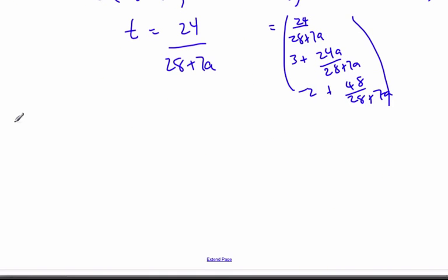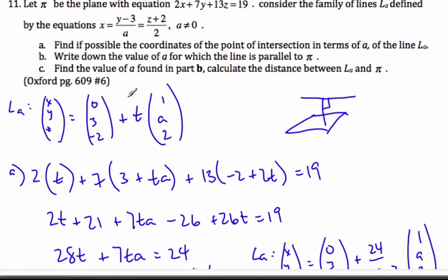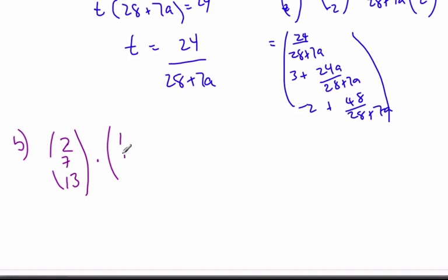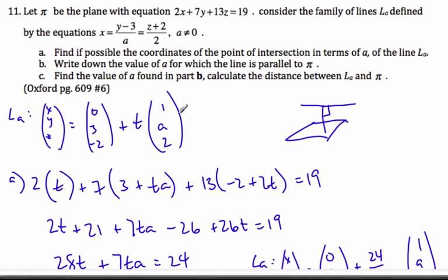The normal vector is (2, 7, 13), and the direction vector is (1, A, 2). Their dot product must be zero. So I get 2 plus 7A plus 26 equals 0, which gives 7A equals -28, so A equals -4. I like that number a lot better than the one from part A.